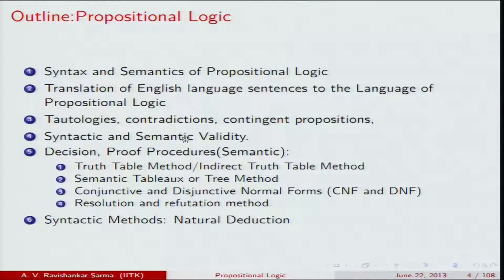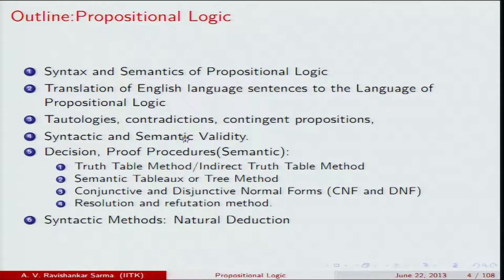There are several decision procedure methods. We begin with the simplest: the truth table method. Truth tables work well when the number of variables is small — two or three — but if the number of variables increases to five or six, there will be 2 to the power of n entries, which becomes difficult to handle manually. We will then study the semantic tableaux method, also called the tree method, which is a core method of this course.